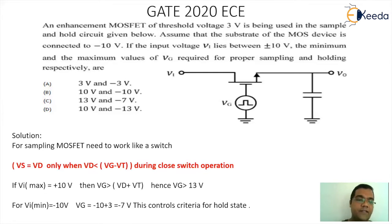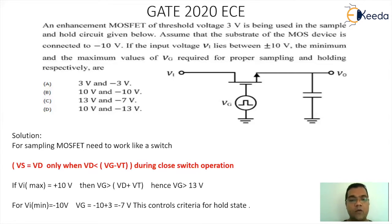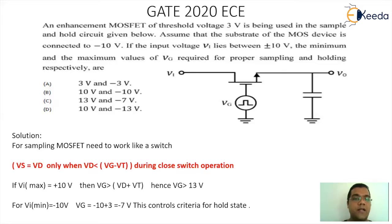Secondly, if I consider the second case where VI will be minus 10, under this situation the value of VG will be minus 10 plus 3, which gives minus 7 volts. So this will actually control the criteria for the hold state. Overall, the two voltage levels for VG are 13 volts and minus 7 volts, and that's the reason the correct option is option C: 13 volts and minus 7 volts.